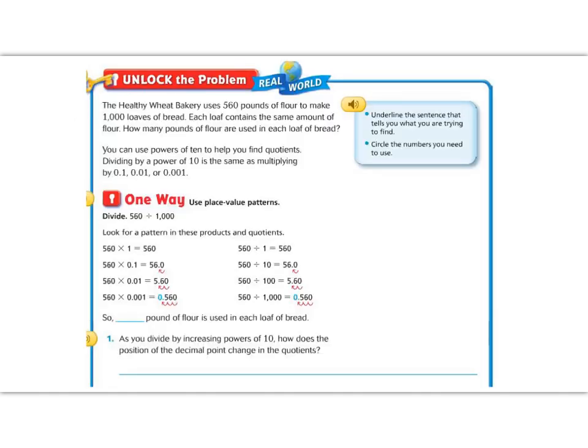Let's begin this lesson by reading the Unlock the Problem. It says, a healthy wheat bakery uses 560 pounds of flour to make 1,000 loaves of bread. Each loaf of bread contains the same amount of flour. How many pounds of flour are used in each loaf of bread?